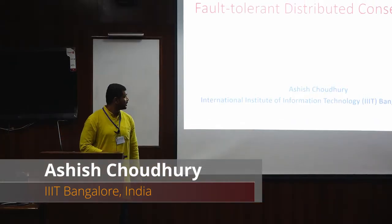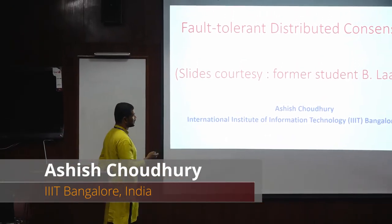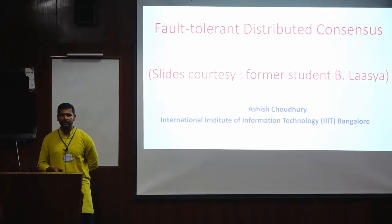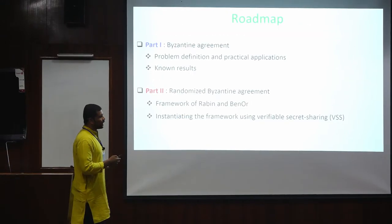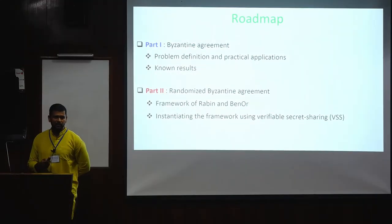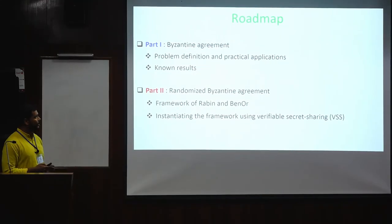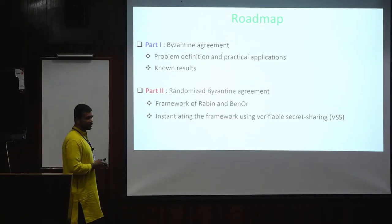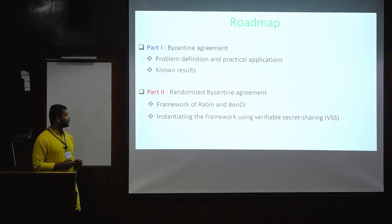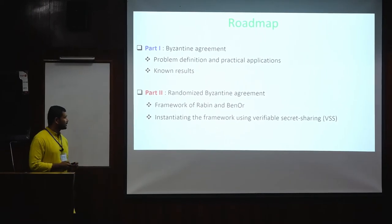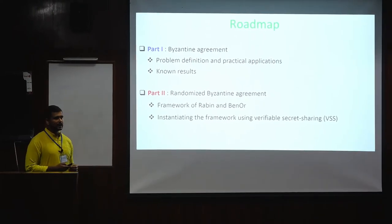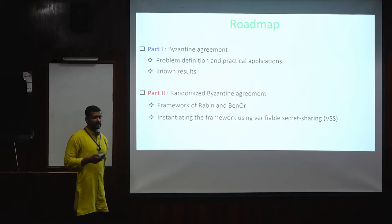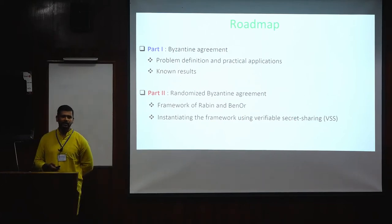I would like to acknowledge Bil Asya, my former master's student, who is right now doing a PhD at Rochester with Muttu, for some of the slides I will be using. I have divided the talk into two parts. Part one will be basic and fundamental, covering the Byzantine agreement problem, its applications, and known results. Part two will be slightly technical, covering randomized Byzantine agreement — specifically the classical framework of Rabin and Benor, and how to use a common coin to design randomized Byzantine agreement in the asynchronous setting using verifiable secret sharing.